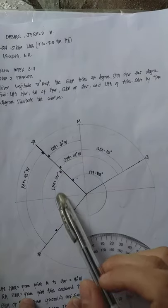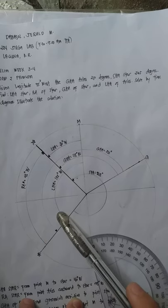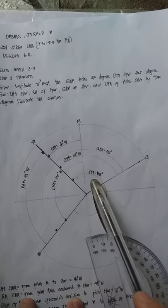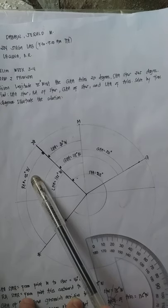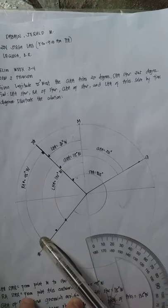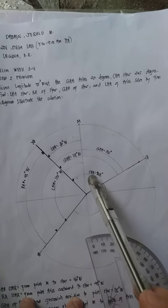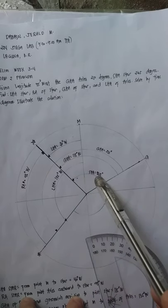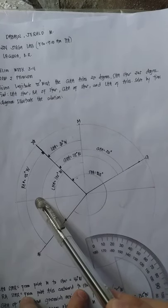To find the Right Ascension of the star, always keep in mind that the Right Ascension equals 360° minus the value of your Sidereal Hour Angle. So 360° minus 265° gives me 95°, which is the Right Ascension of my star going in the eastward direction from the first point of Aries. As you can see, the Right Ascension and the Sidereal Hour Angle together add up to a perfect 360°.